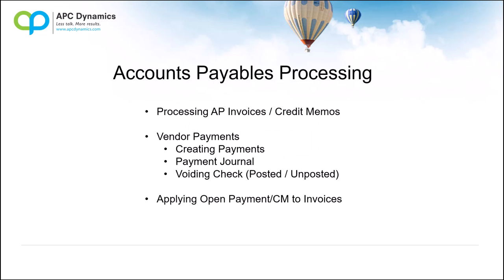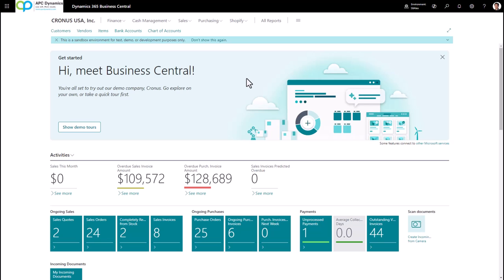Now let's talk about vendor payments. We're going to talk about how to create payments directly from the vendor card, then how to create payments using the payment journal, and lastly how to void checks whether posted or unposted. Before you do your check run, it's always a good idea to review all outstanding invoices from your vendors. The easiest way to do that is by running the Aged Accounts Payable report.